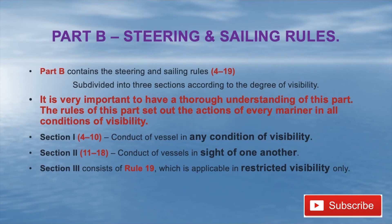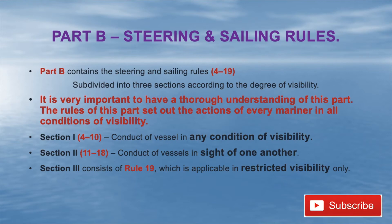Part B is one of the most important parts — Steering and Sailing Rules. It contains rules 4 to 19 and is further subdivided into three sections. Section I covers rules 4 to 10: the conduct of a vessel in any condition of visibility — exclusively covering what a vessel's conduct should be regardless of visibility conditions.